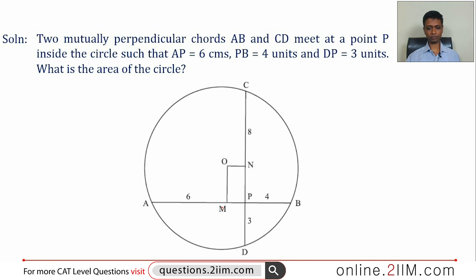Now AM will be half of AB, this is 5, or MP is 1. Now CN is half of 11, so CN is 5.5. The whole thing is 8, or NP is 2.5. ON is 1, OM is 2.5. We have found the dimensions of this rectangle.